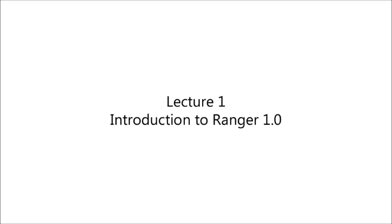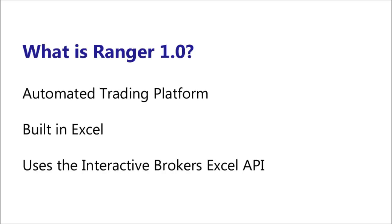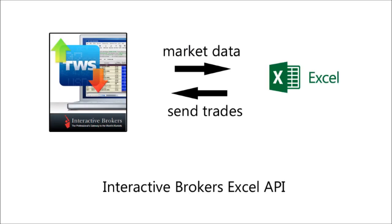In this lecture we're going to talk about Ranger 1.0 — what it is and what it does. Ranger 1.0 is an automated trading platform built in Excel that uses the Interactive Brokers Excel API, which means it gets its market data and sends its trades through Interactive Brokers.